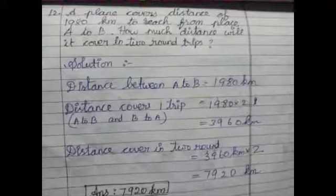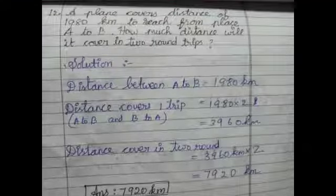The final question in this exercise and the unit is 12th one. A plane covers a distance of 1980 km to reach from place A to B. How much distance will it cover in two trips? Listen children, in one trip itself, it has to go A to B and return back B to A. That is one trip. So the distance between A to B, they given 1980.